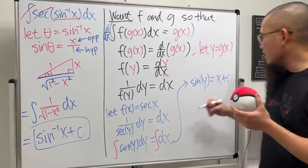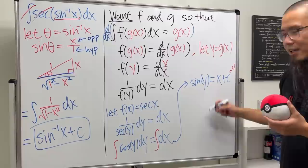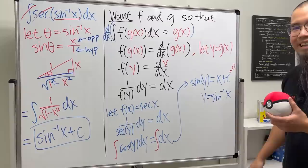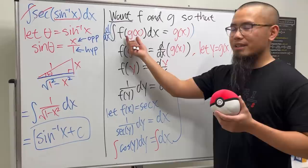And here if you would like, put on a plus C, but to make things more clean I will say make C equal to zero. And then you can just take the inverse sine of both sides. You get y is equal to the inverse sine of x. And remember this is the y which is g of x.